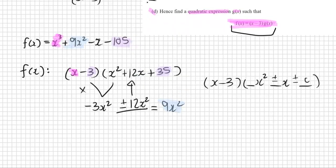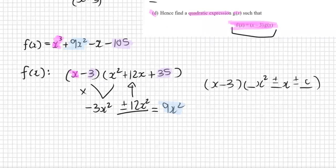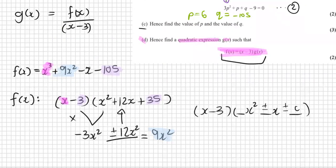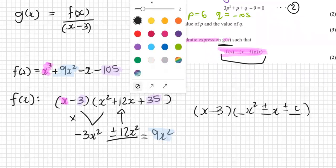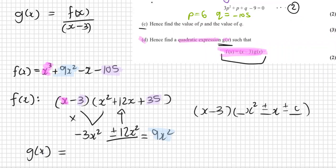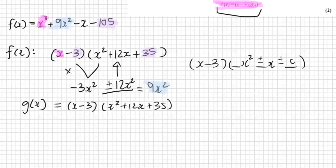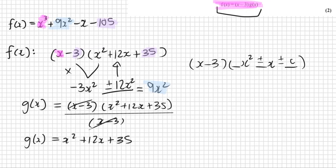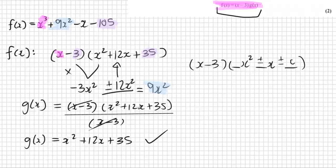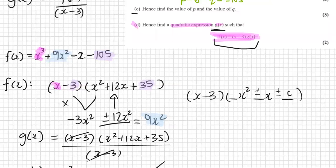So we've got our factors here and see where we're going with that. We were asked what is G of X? So G of X is equal to our F of X, which is now factored into this thing, over X minus three. So we rearranged it a little bit. And fantastic. Those cancel out, nice and neat. So G of X is simply equal to X squared plus 12 X plus 35. That is question 5D. Concludes question 5.